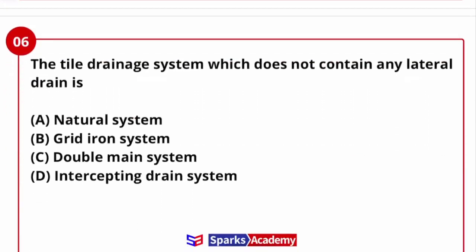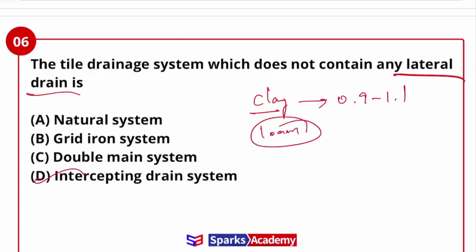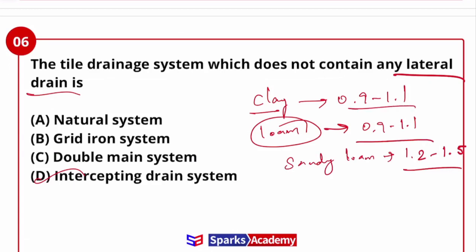Next question: the tile drainage system which does not contain any lateral drainage is called the intercepting drainage system. Regarding soil types and tile drainage spacing: for loam (a combination of silt, sand, and clay), the depth ratio is 0.9 to 1.1; for sandy loam it is 1.2 to 1.5. For clay soil, tile drainage pipes should be spaced 9 to 15 meters apart.